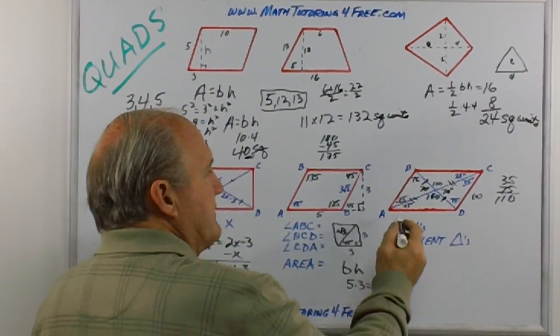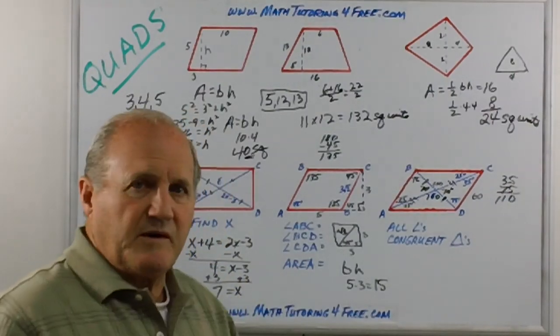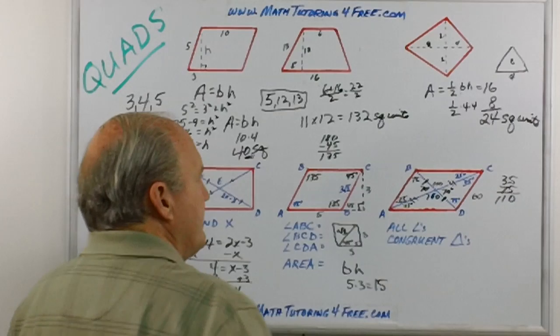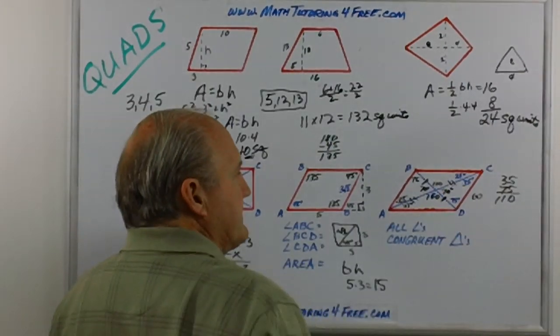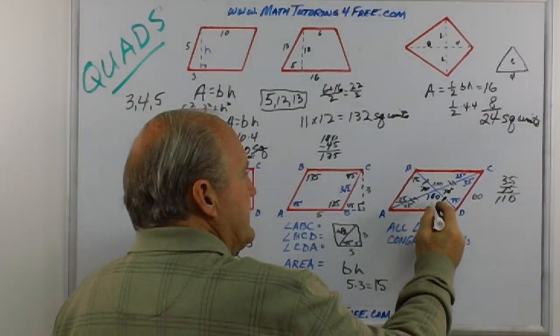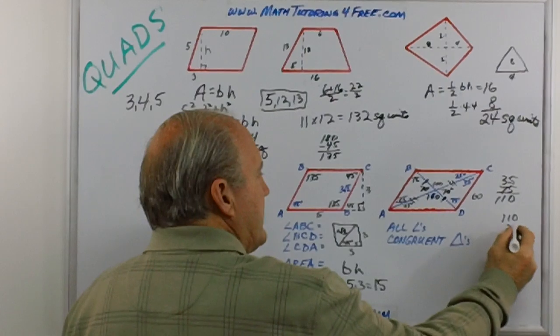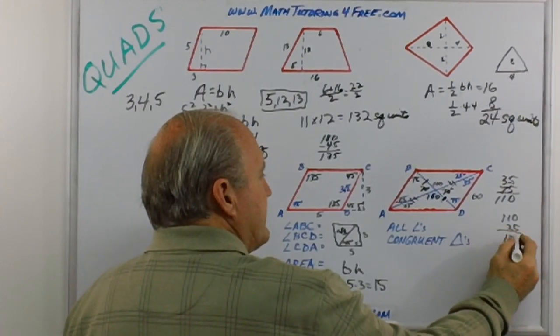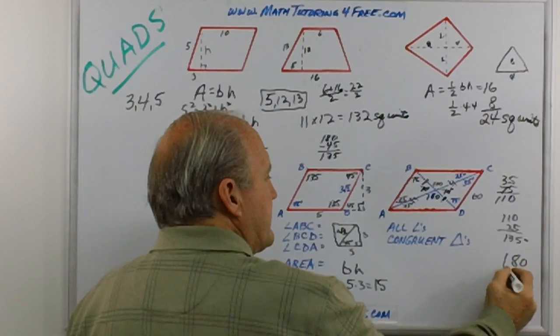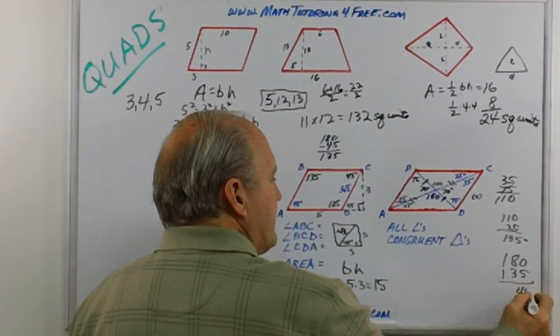Another way we could do that is these are two parallel lines crossed by a transversal, so therefore the opposite interior angles are equal. And that leaves then finally, if this is 110 and 25, that gives us 135. 135 subtracted from 180 gives us 45 degrees.